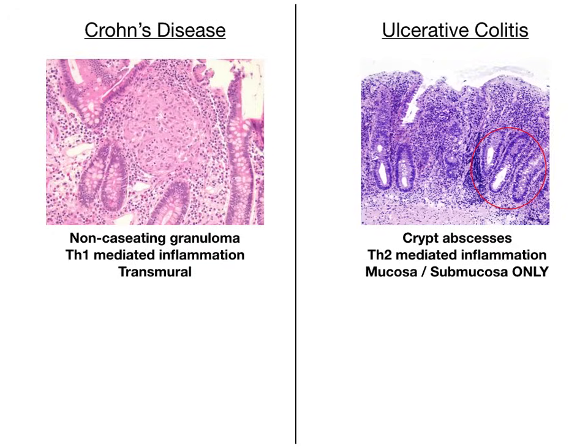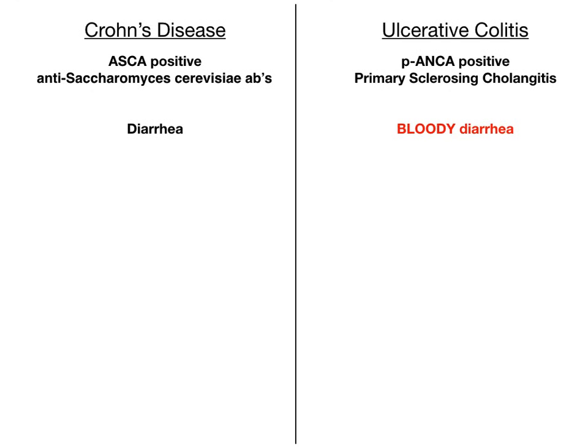Crohn's disease is associated with ASCA — anti-Saccharomyces cerevisiae antibodies. Just know the association; if you see it on an exam, they're pointing to Crohn's disease. Ulcerative colitis is associated with P-ANCA, which you'll also see associated with primary sclerosing cholangitis. Historically, primary sclerosing cholangitis was a test favorite. ASCA is a newer association, so know both: P-ANCA with UC and ASCA with Crohn's.